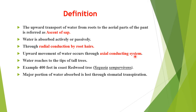We have to understand how water reaches the top or the tips of tall trees — even a 400-feet redwood tree (Sequoia) — where water reaches to the very top. The major portion of water absorbed by the roots is lost through stomatal transpiration.